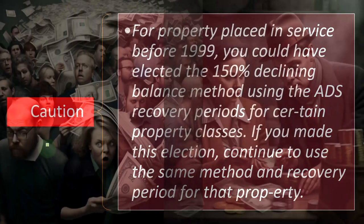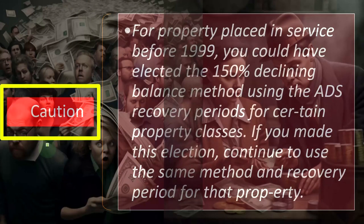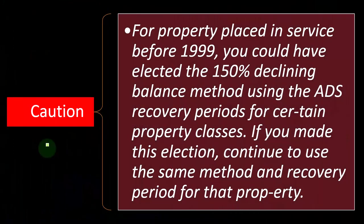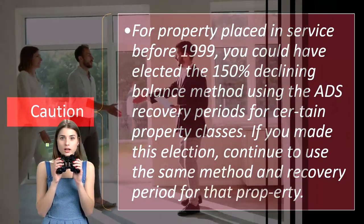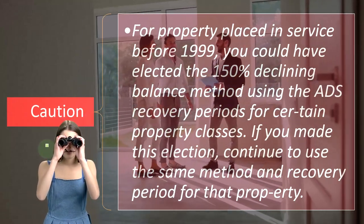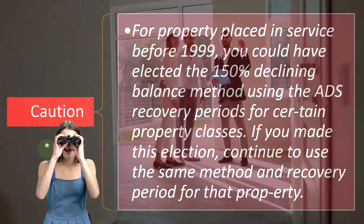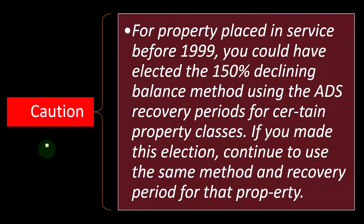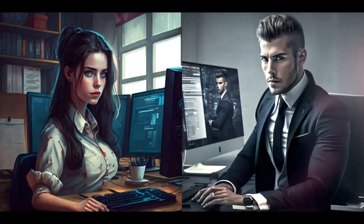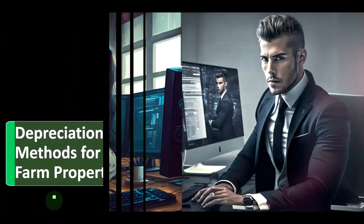Caution: for property placed in service before 1999, you could have elected the 150% declining balance method using ADS recovery periods for certain property classes. If you made that election, continue to use the same method and recovery periods for that property. The concept of consistency applies — you generally cannot alter or change the methods once they've been put into place, since consistency is required to properly allocate depreciation over the life of the asset.